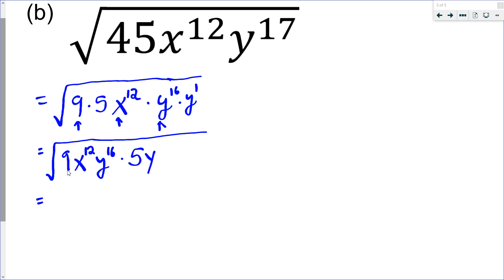Square root of 9, that's 3. Square root of x^12, I divide the exponent by 2. That's x^6. And then y^16, we'll divide the exponent by 2, becomes y^8. So those are all the perfect squares. And then now, I'm left with 5y left behind.